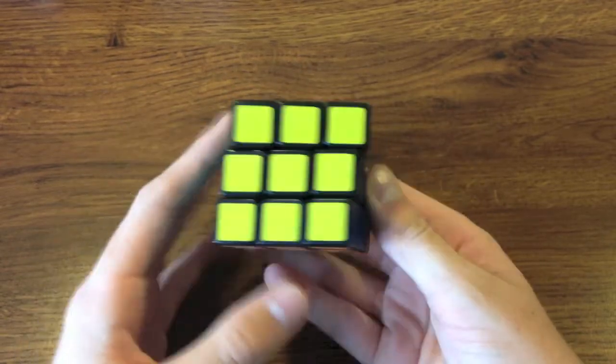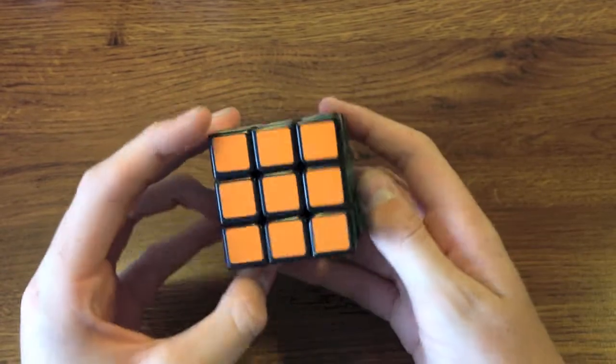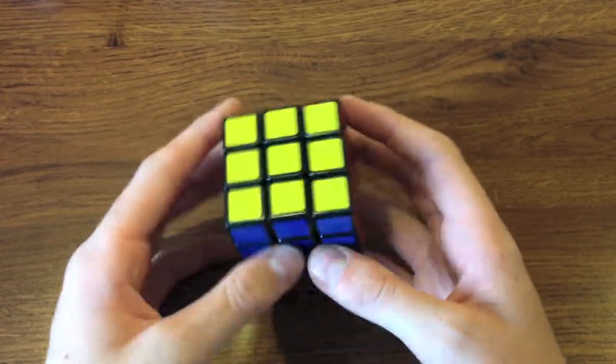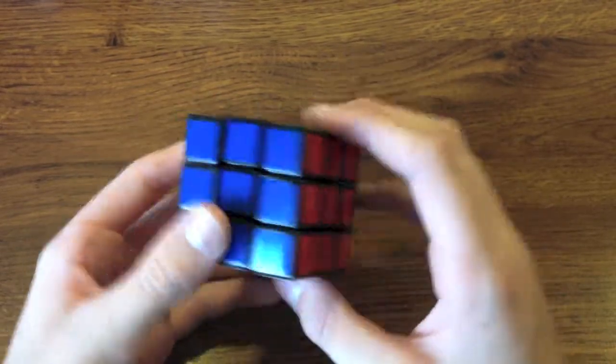So this doesn't feel greasy at all, which is kind of surprising. The stickers look kind of small, but it reminds me of a dying cube. I think this is 56mm just off feeling it, but let's just do first turns.